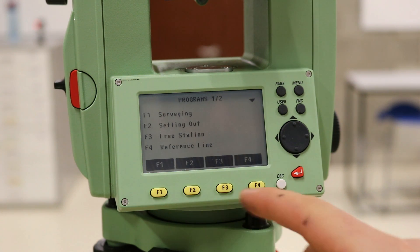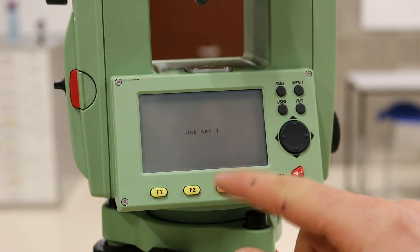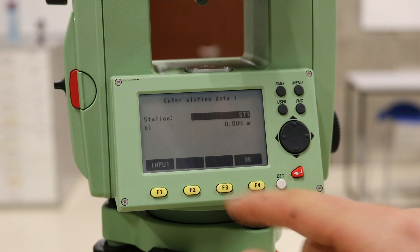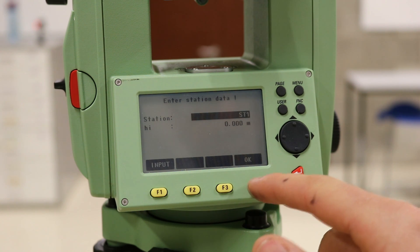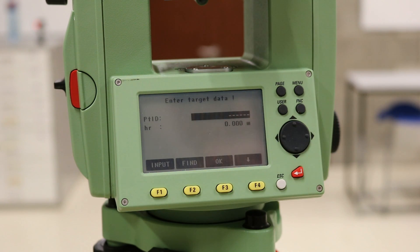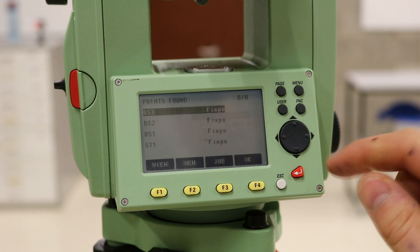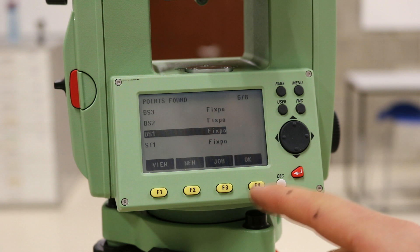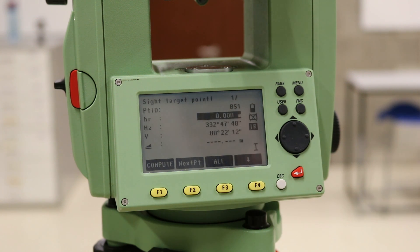If setting up over an unknown point, enter the free station mode from the programs menu and press start as the job has already been set. Enter a station name, for this example we will call it SD1, and press the OK function key. On the next screen, you can either input coordinates of known points that have not yet been saved, or you can use previously saved points using the find function. For this example, we will input BS1 using the find function.